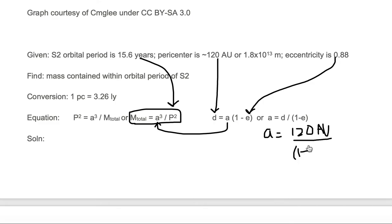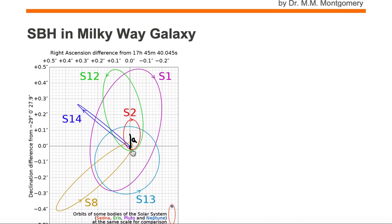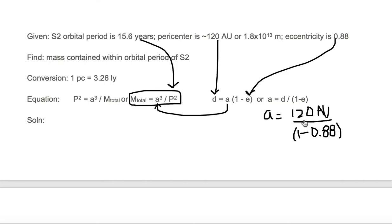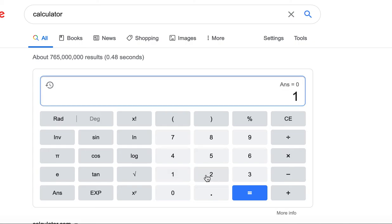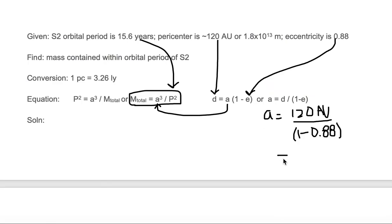So a is equal to 120 AU divided by 1 minus e. And e we know is 0.88, the eccentricity of the orbit. A perfectly circular orbit would have an eccentricity of zero. We have a value of 0.88 which shows we have a more elliptical orbit. So now we need to take 120 divided by 1 minus 0.88. Let's go to our calculator. We take 120 divided by parentheses 1 minus 0.88 close parentheses equals, and our value is 1,000.